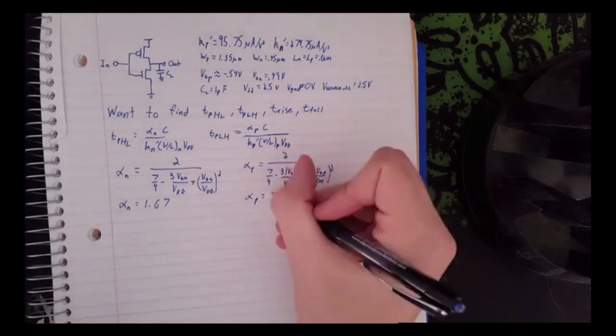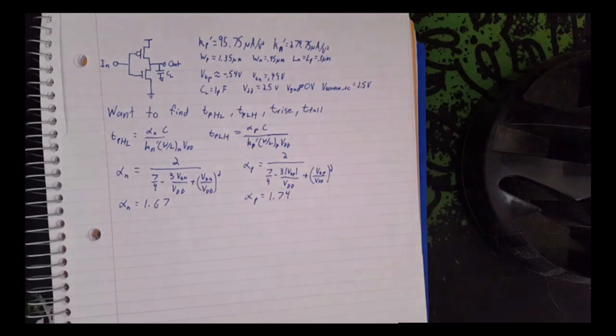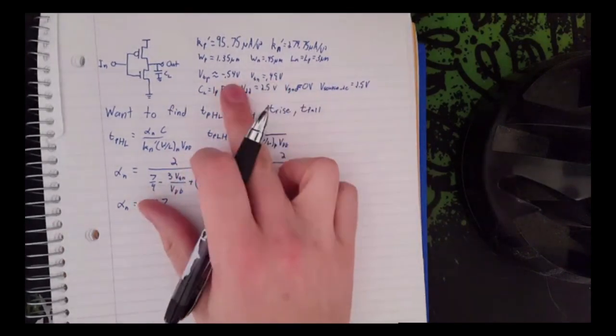For alpha p, we get 1.74. These are off slightly just because our V thresholds are slightly different.